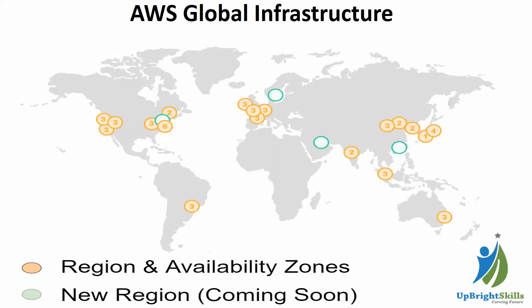For AWS global infrastructure, you can see the global outreach of AWS in this image. The orange circles indicate regions and availability zones that are currently live and hosting many customers. The green circles indicate new or upcoming regions and availability zones. You can visit aws.amazon.com anytime to see the latest snapshot of current regions, availability zones, and upcoming ones.